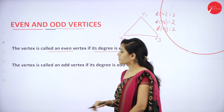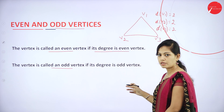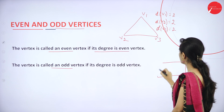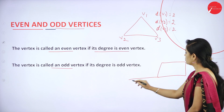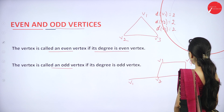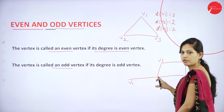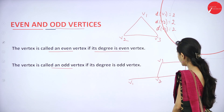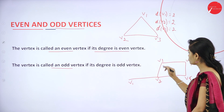A vertex is called an odd vertex if its degree is odd. For example, in a graph with V1, V2, V3, V4, and V5 — D(V1)=1 and D(V2) is connected to V1, V3, and V5 giving degree 3. D(V3)=2. Adding vertex V6, we find D(V1)=1, D(V2)=3, and D(V3)=3.